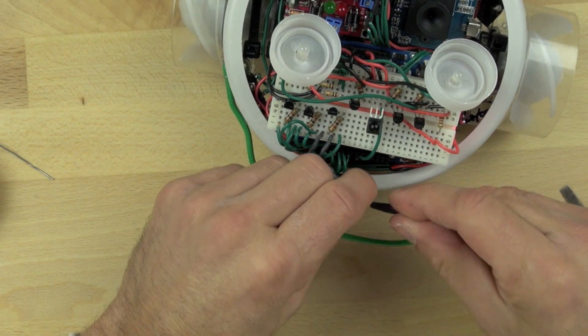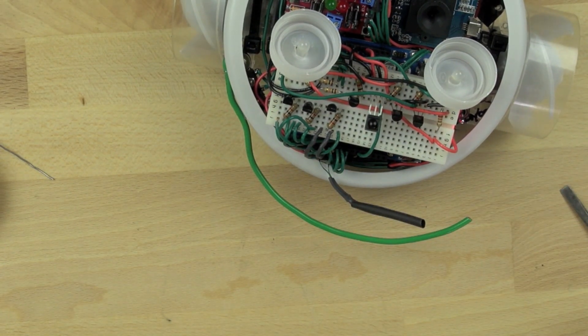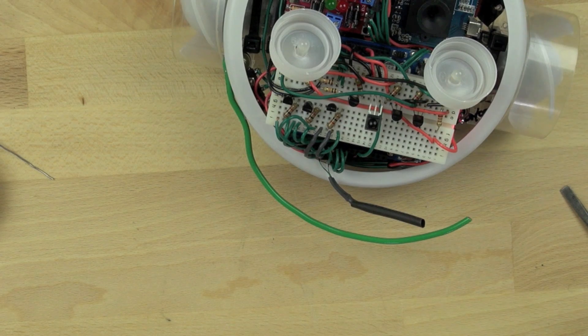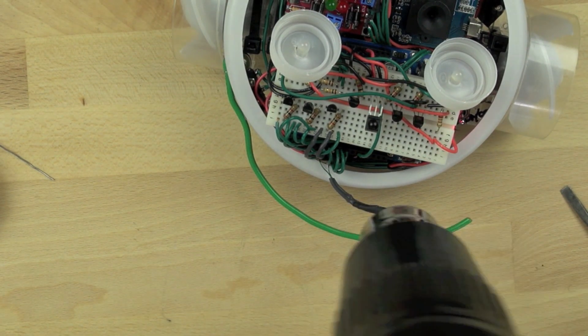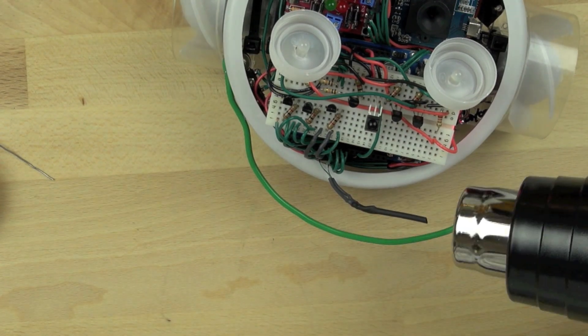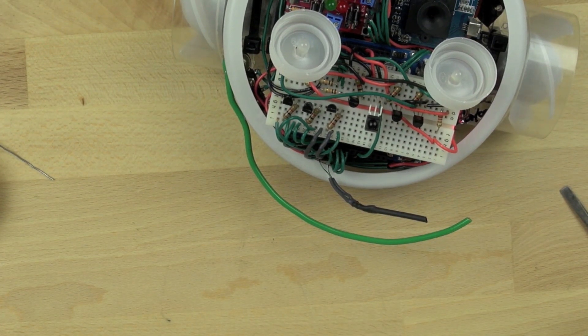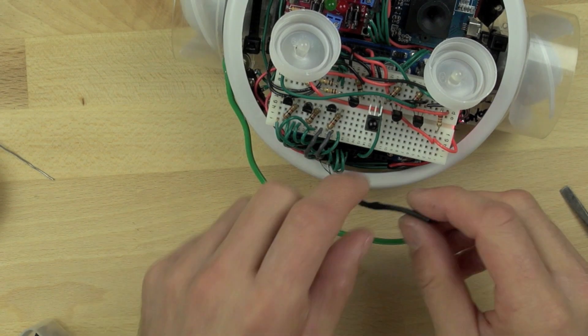So we're going to trim off a little bit of our heat shrink and we'll be using our heat shrink gun to protect that new joint that we've created. And we're just going to tuck that inside Bitsy's shell and we won't worry too much about it because we've demonstrated that it works.